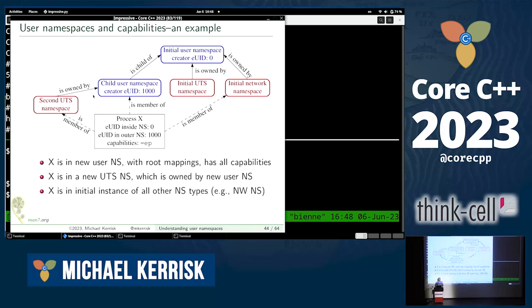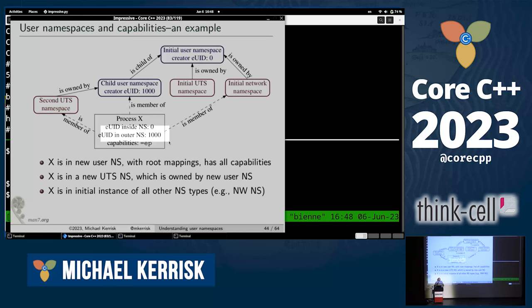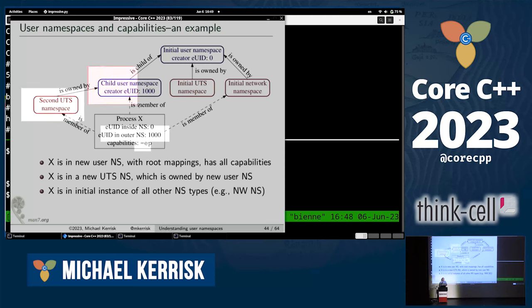This process was set up with the root mapping — its UID inside the namespace is zero, but outside the namespace its UID is 1000, and the kernel gives this process all permitted and effective capabilities. This process is a member of the new UTS namespace and the new user namespace. But it's also a member of each of the other kinds of namespaces: because the unshare command didn't say to create a new network namespace, this process is still in the initial network namespace, the initial mount namespace, the initial PID namespace, and so on.